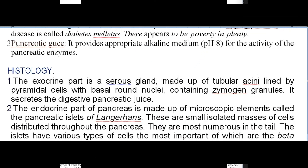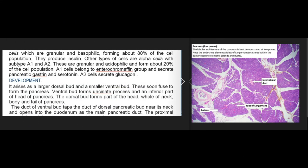Pancreatic juice provides an appropriate alkaline medium (pH 8) for the activity of pancreatic enzymes. Histology: the exocrine part is a serous gland made up of tubular acini lined by pyramidal cells with basal round nuclei containing zymogen granules, secreting digestive juice. The endocrine part is made up of microscopic pancreatic islets of Langerhans — small isolated masses of cells distributed throughout the pancreas, most numerous in the tail. The most important cells are the beta cells, granular and basophilic, forming about 80% of the cell population, producing insulin.